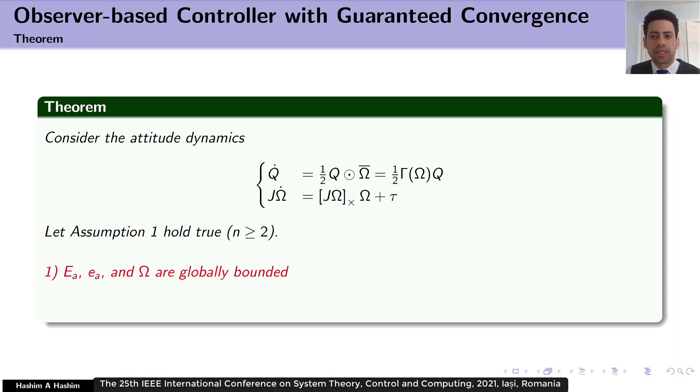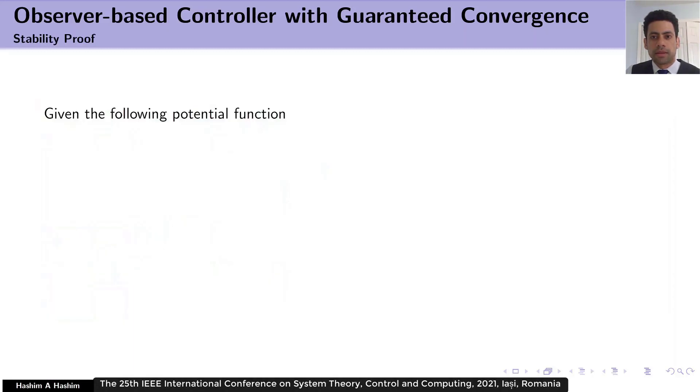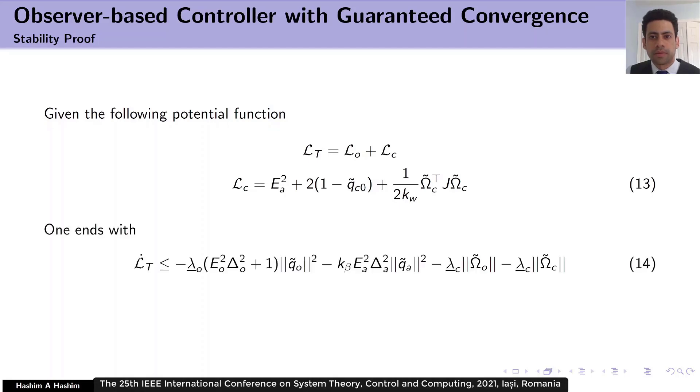Also, we can see that starting from any initial conditions, all the error components converge asymptotically to the origin. Once again, let's discuss the stability proof. Given L_T the potential function, where L_C is as follows. We obtain the following inequality.